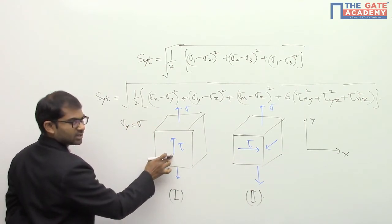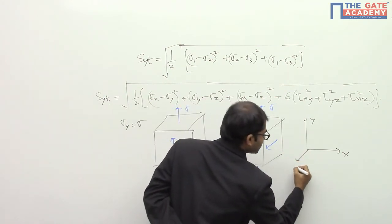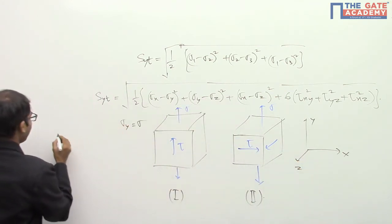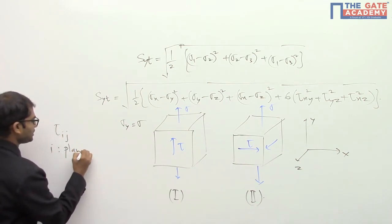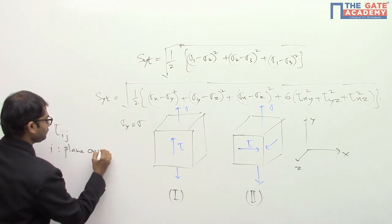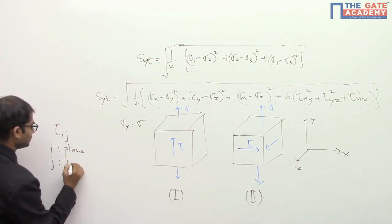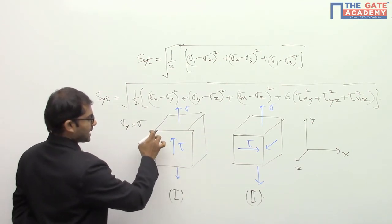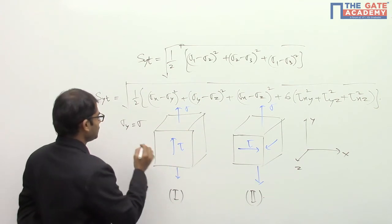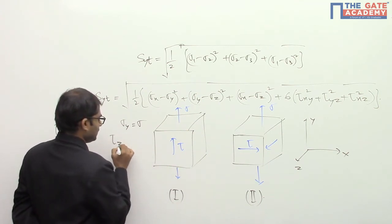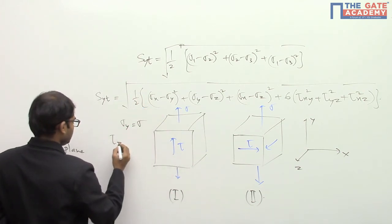And this is nothing but tau acting on the z plane. Tau_ij means i is the plane on which it is acting, or basically the plane name, and j is the direction. If you take this one, this is acting on a plane whose normal is along the z-axis.